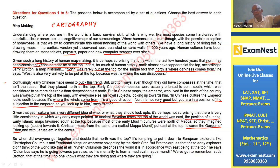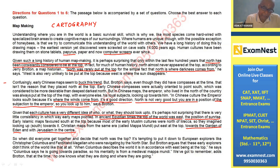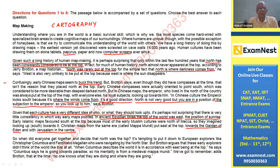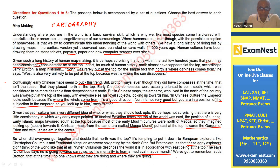The drawing of maps was based on religion. When did they all reach a consensus that north should be at the top? One suggestion is that European explorers navigated by the north star, but that can't hold, because Bruton argues these early explorers didn't think of the world that way at all. When Columbus describes the world, it is in accordance with east being at the top — Columbus says he's going towards paradise, so his mentality is from a medieval mappa mundi.